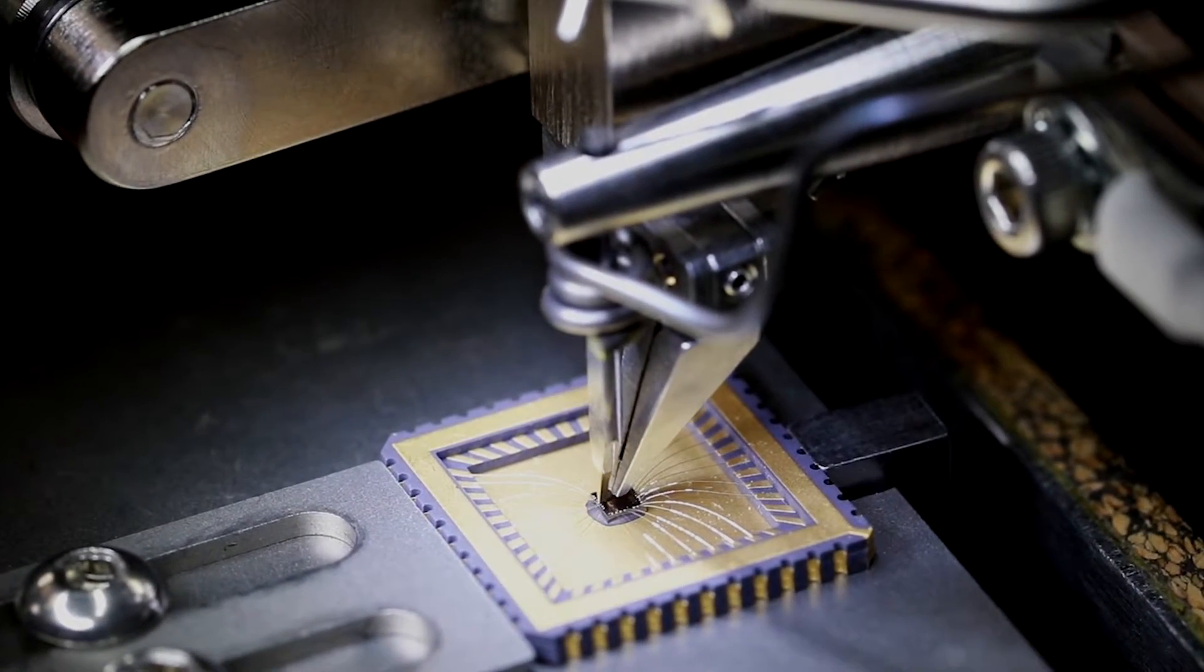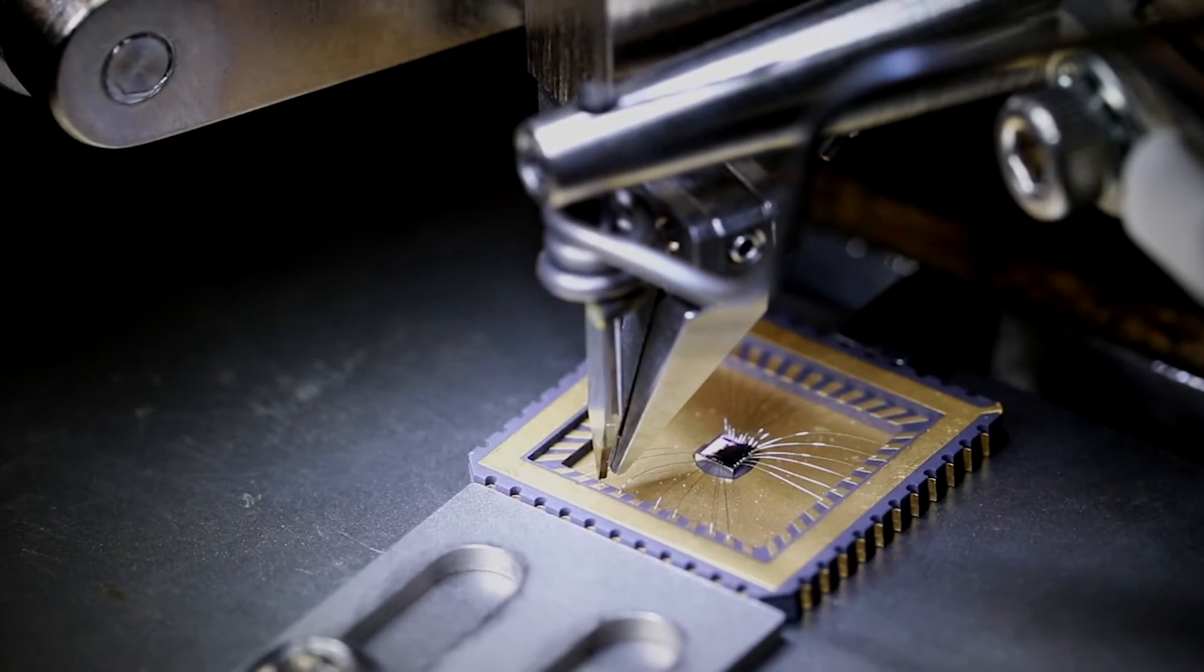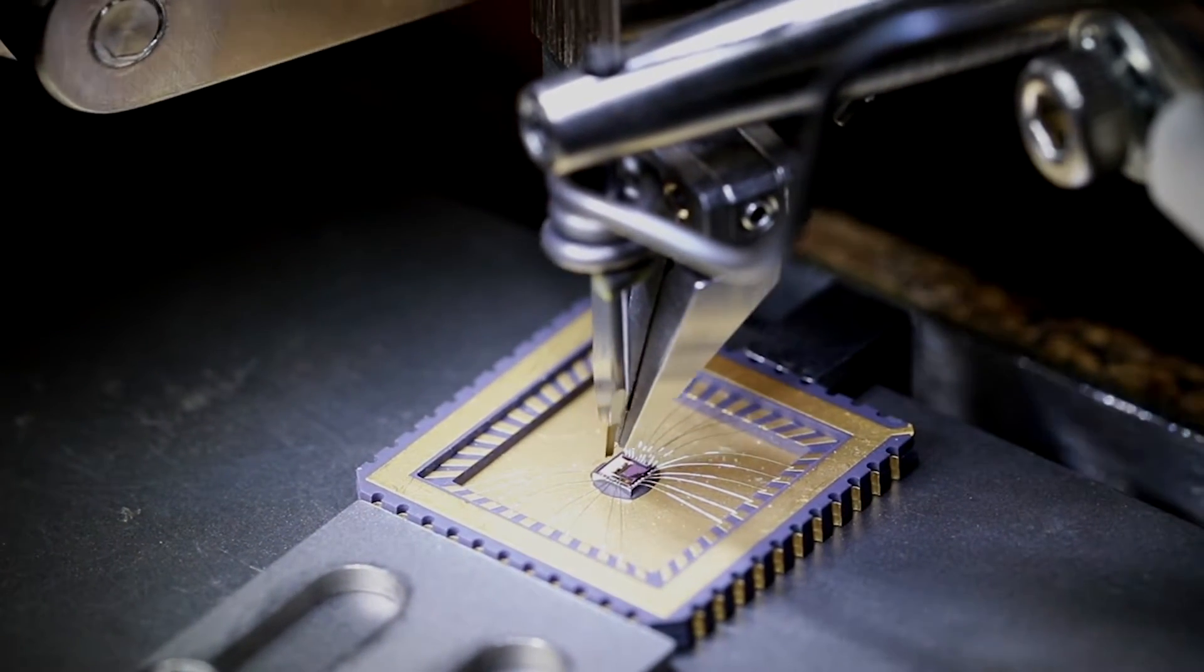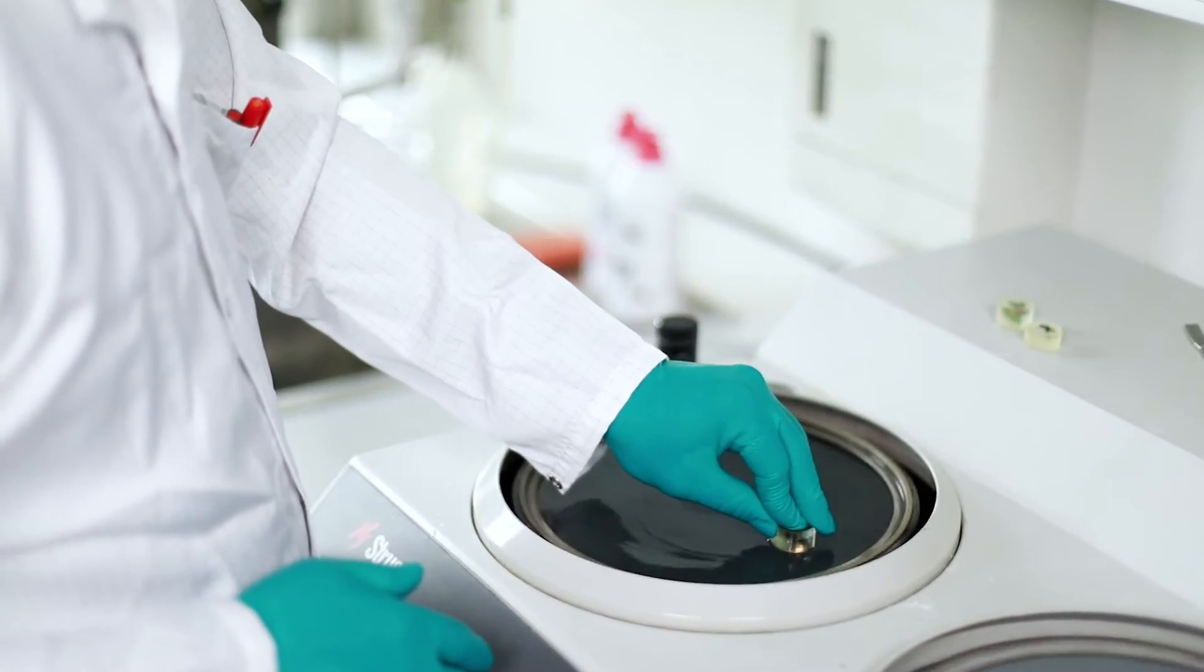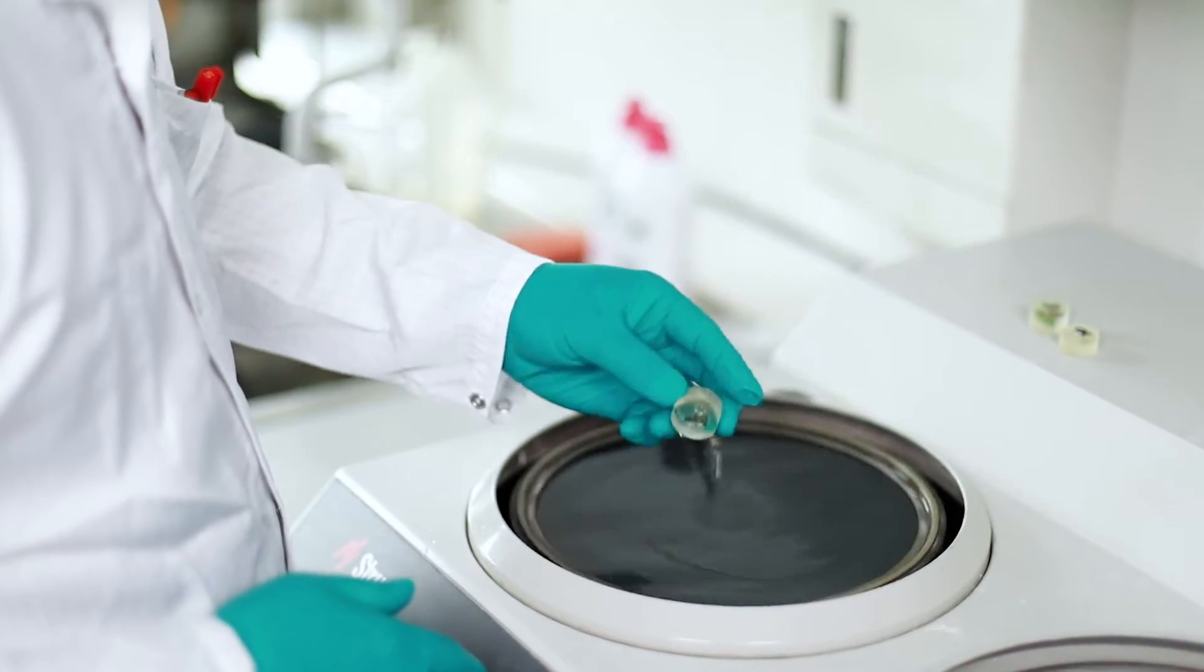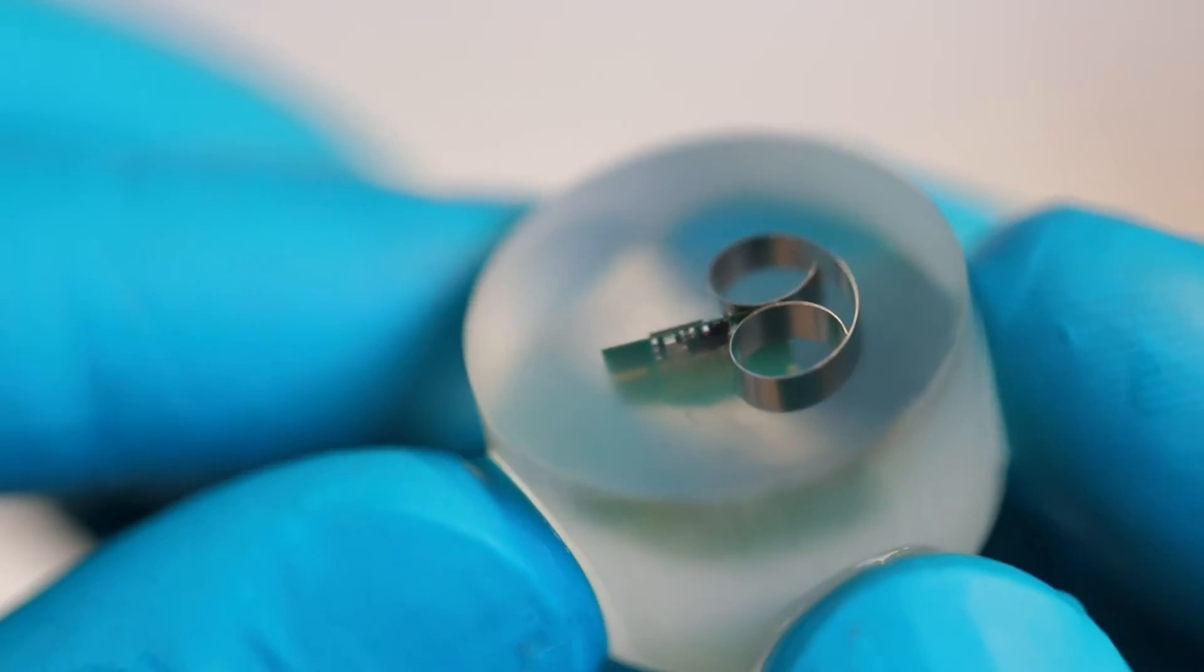Another sample preparation method is step-by-step cross-sectioning, which is used to look for cracks in solder joints or other internal failures.